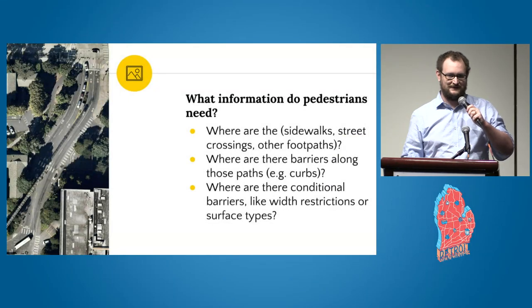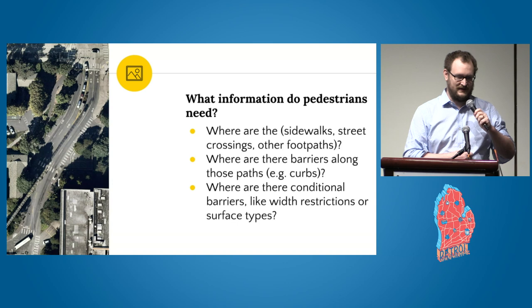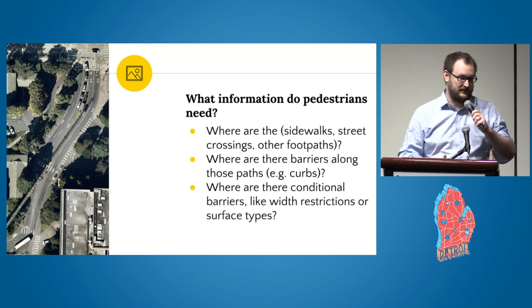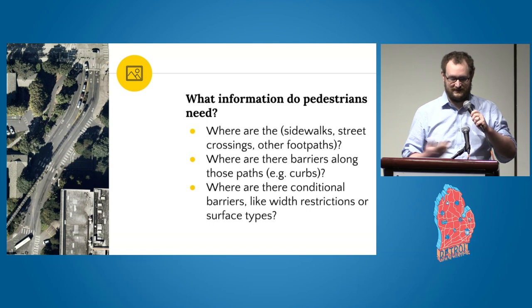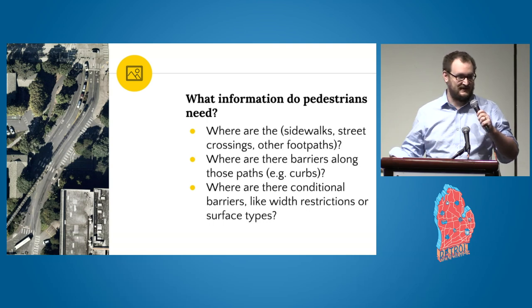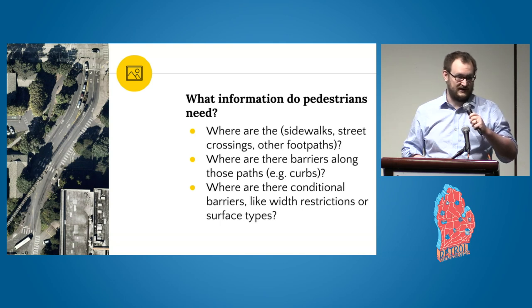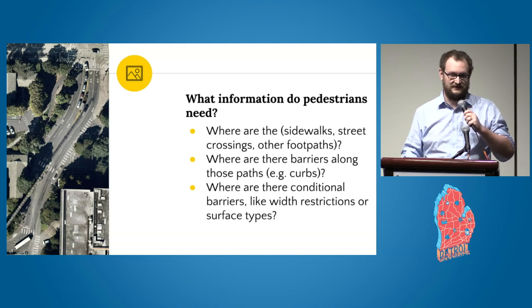The kind of information people need — which is almost always missing from maps including OpenStreetMap — includes simple questions like: where are sidewalks, crosswalks, or footpaths? Where are there barriers like large raised curbs or gaps in the infrastructure? And where are other types of barriers — things like restrictions on width, very narrow bridges, or surface types? Gravel can pose a serious challenge to somebody using a wheelchair.